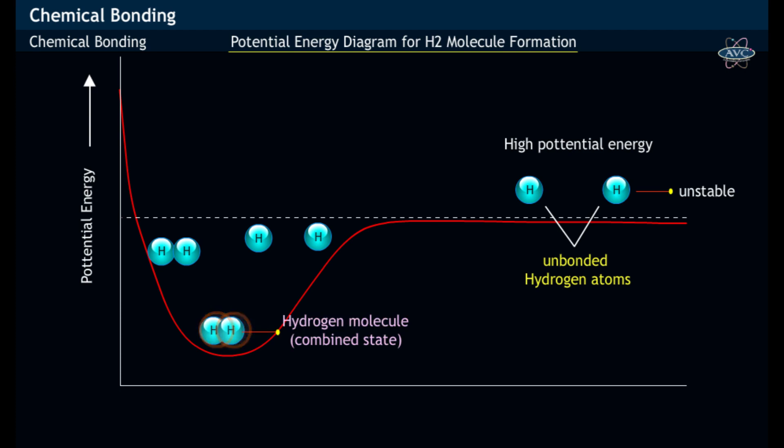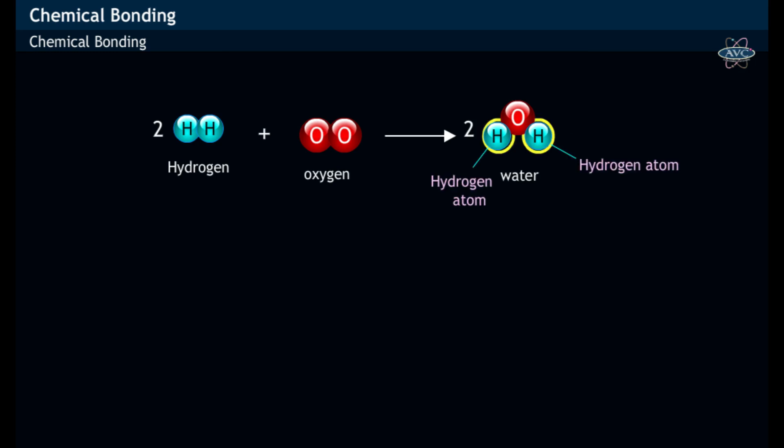While the combined state hydrogen molecule has got lower potential energy, having greater stability. Similarly, in case of water, the two hydrogen atoms are chemically bonded to one oxygen atom.